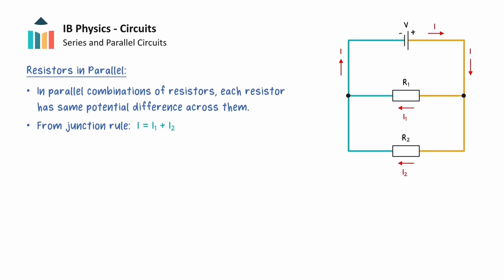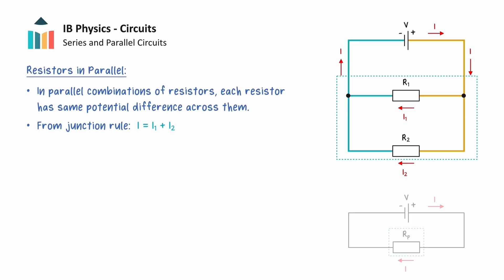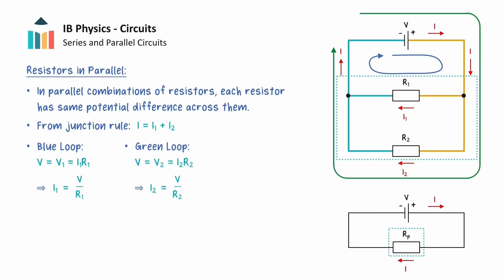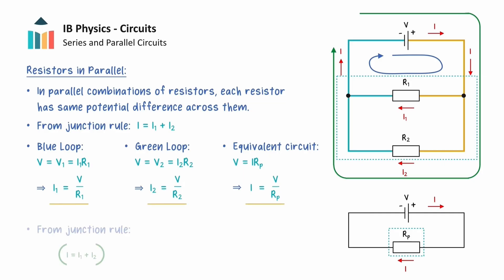Similar to resistors in series, it is possible to replace a network of parallel resistors with a single resistor of an equal resistance. Using the blue loop, the gain in electrical potential energy is due to the voltage of the cell V, and the loss of electrical potential energy is due to resistor R1 only. These can be equated to each other and we can get an expression for the current going through resistor R1. A similar procedure can be used with the green loop to get an expression for the current I2, and we can do the same for the current in the single resistor circuit. We can now substitute these expressions for the currents into the junction rule. By cancelling out the voltage of the cell, we find that the sum of the reciprocals of the two resistors is equal to the reciprocal of the single equivalent resistor. This expression shows that the total resistance of two resistors in parallel is smaller than any of the individual resistances.